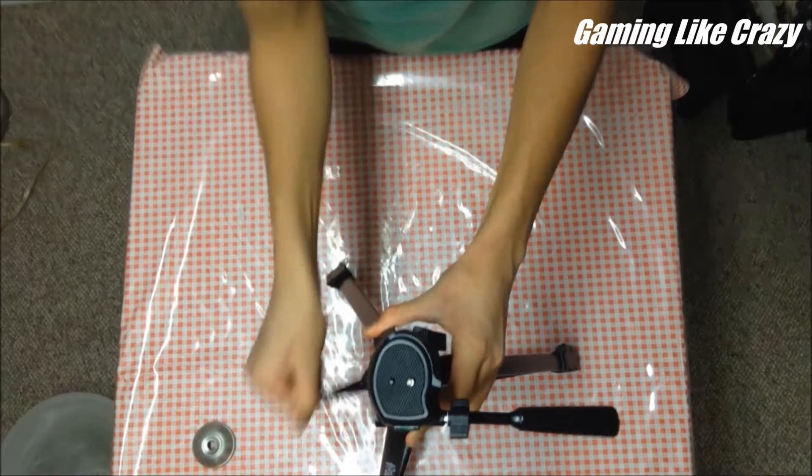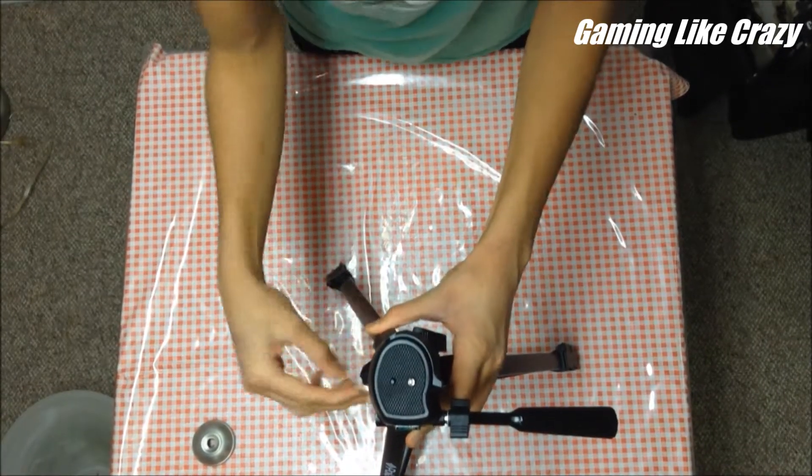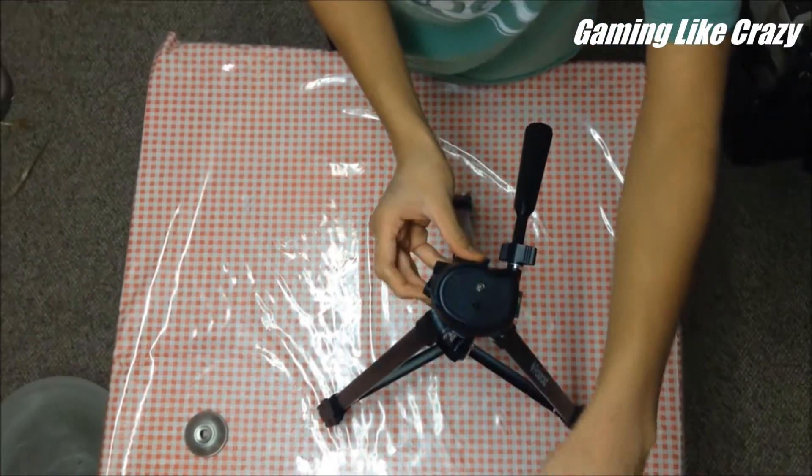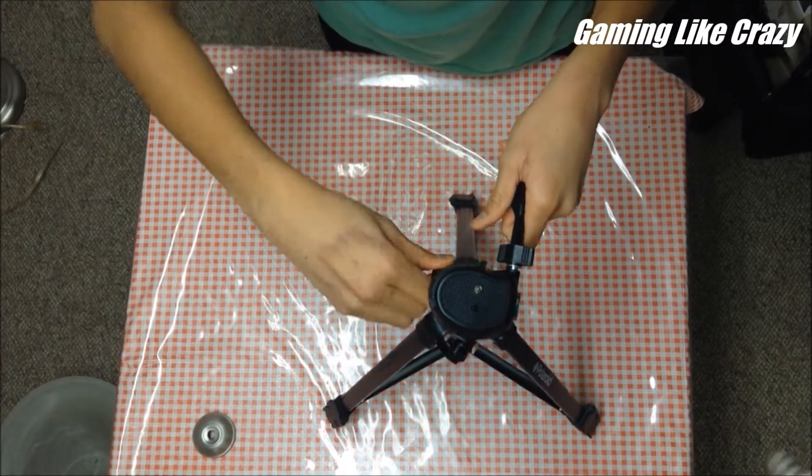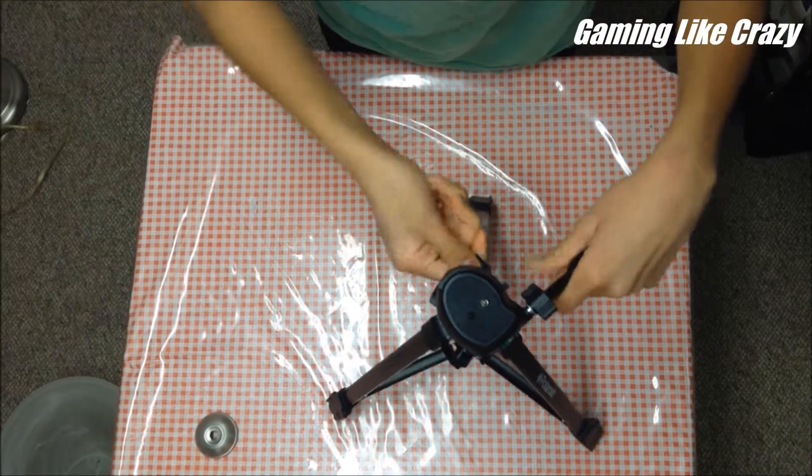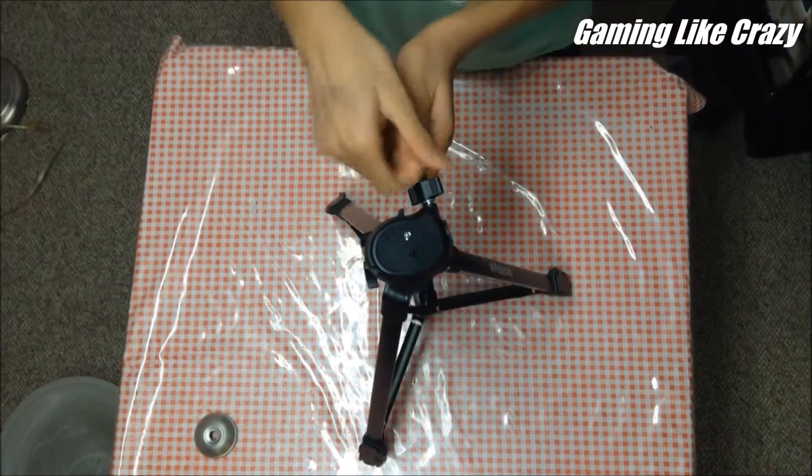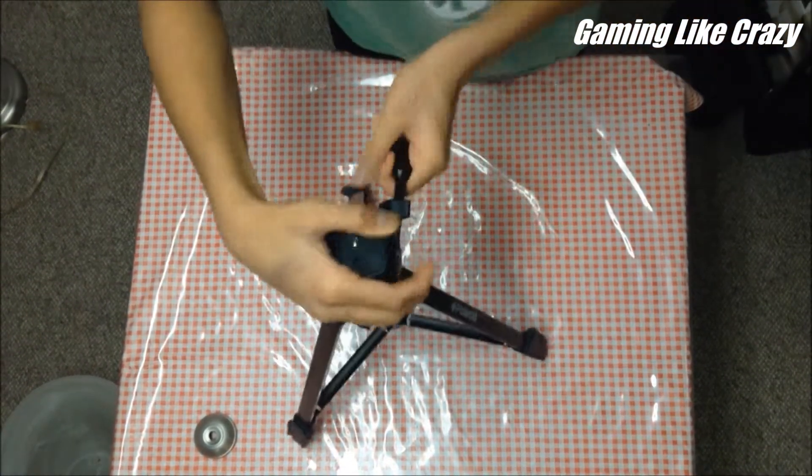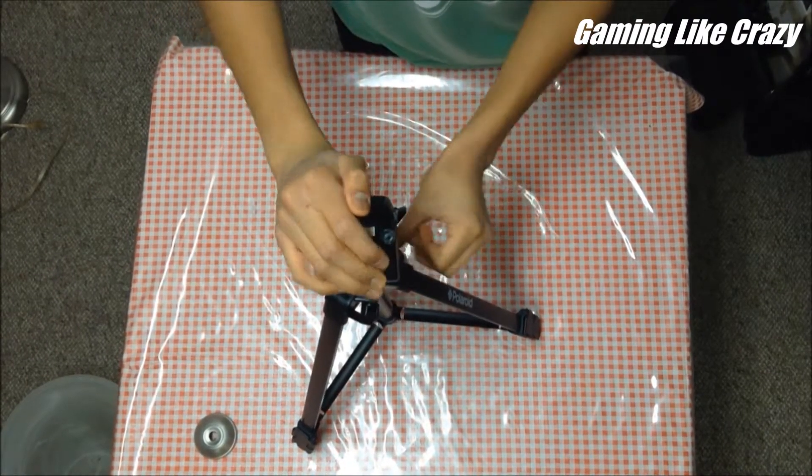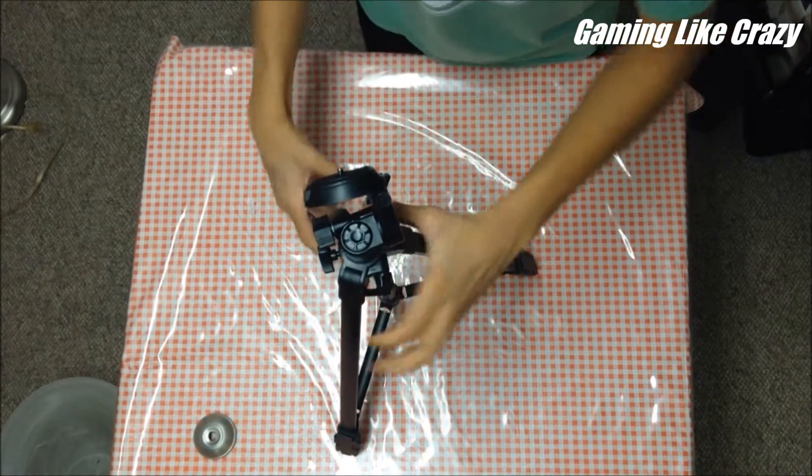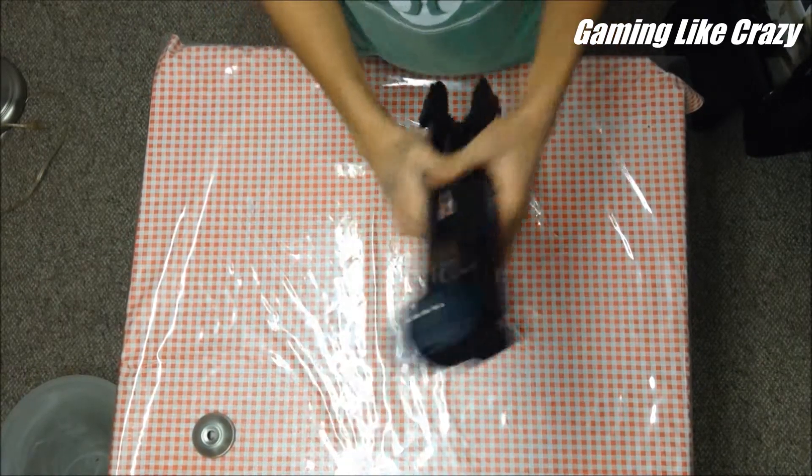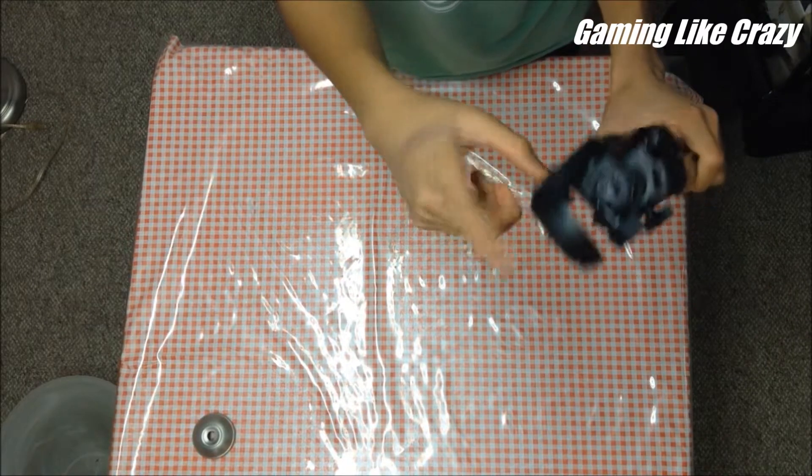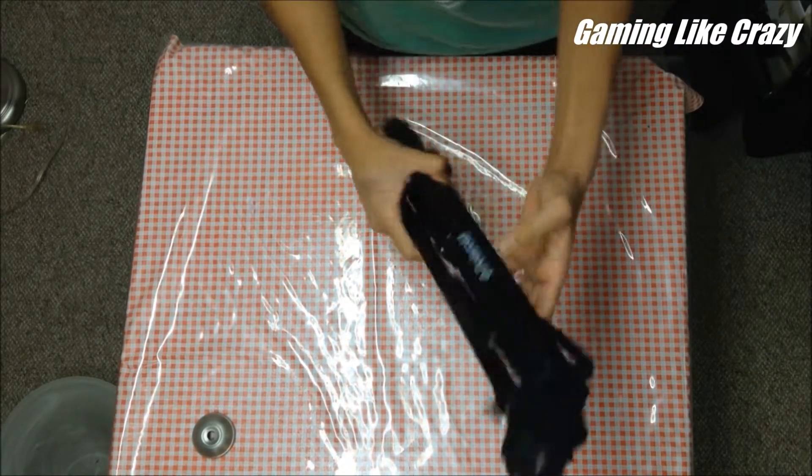Now on to the camera. I might actually just return this tripod because of the way this sits. I don't like how this head sits. I like these legs, but this head needs to go. This head needs to be metal and needs to be flat. On to the camera now.